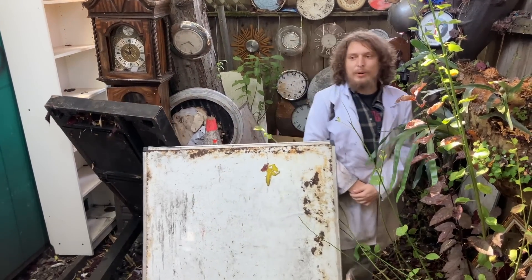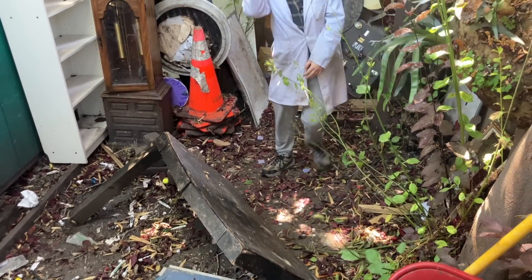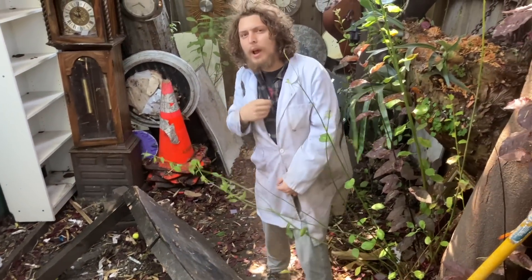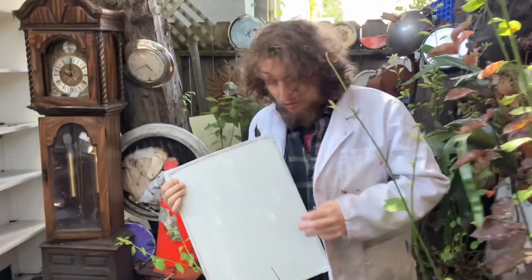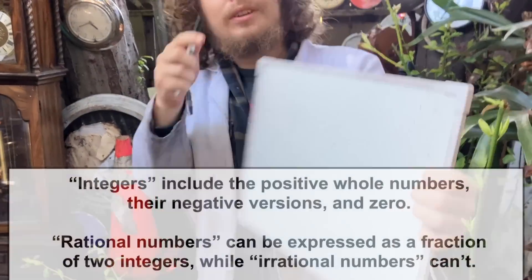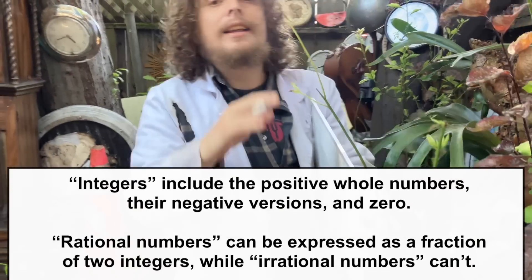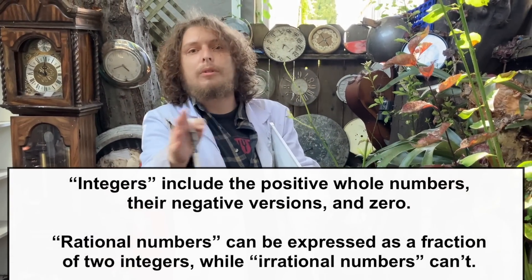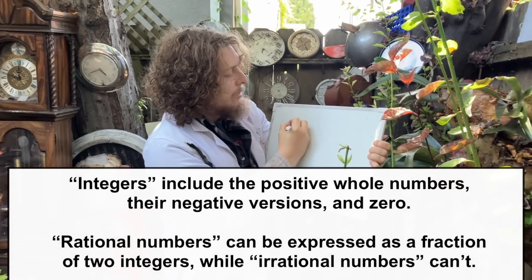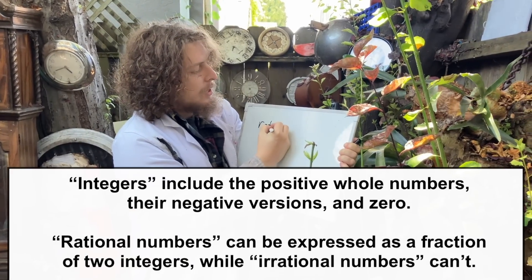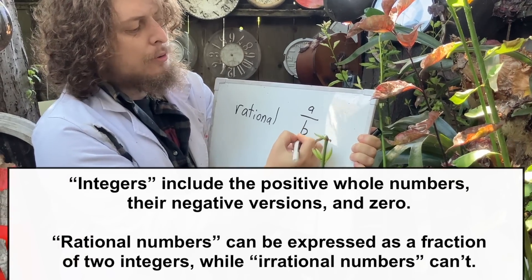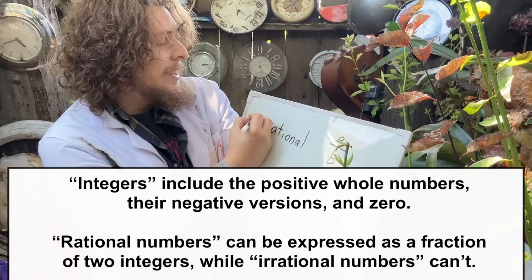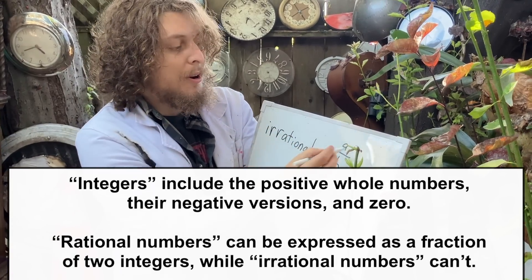Hey folks, welcome back to Combo Class, where today we're going to look at some very interesting ways that you can prove that some numbers are irrational. To get our terms clear, an integer is like a whole number but including zeros and negatives, and a rational number is a number that can be expressed as some fraction of two integers, whereas an irrational number can't.